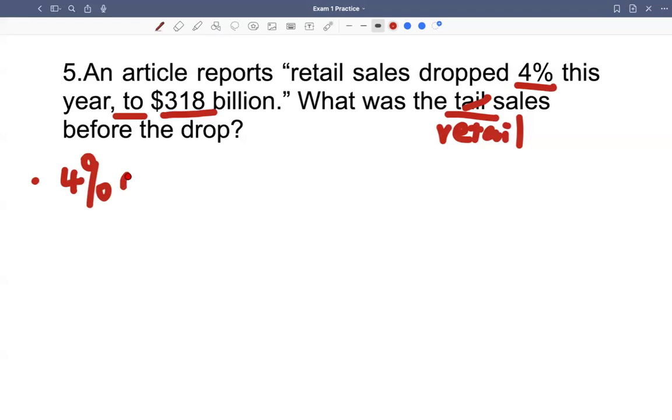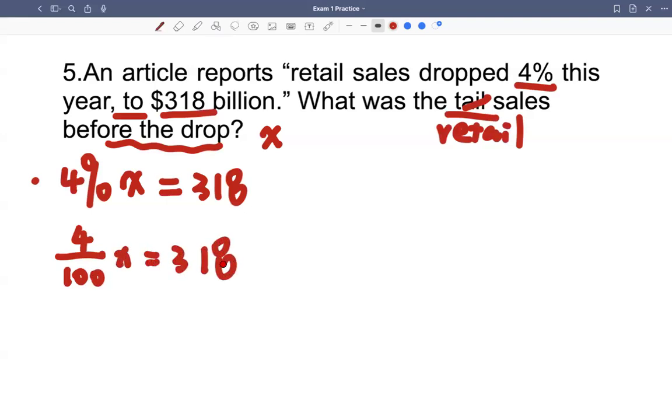Let's call before the drop, let's call the sales X. So multiply by X. So 4% of X dropped equals to 318 billion dollars. So again, 4% is 4 divided by 100. And we rewrite the equation like this. We'll just use a calculator to do 4 divided by 100 to get 0.04. X equals to 318 billion dollars.